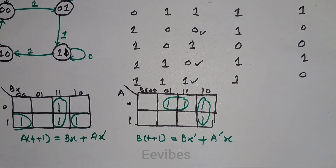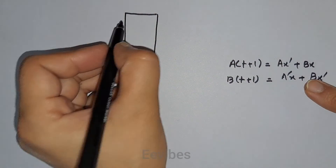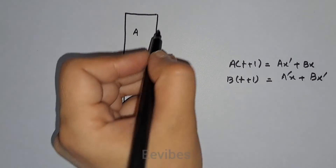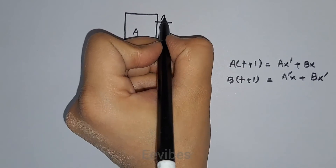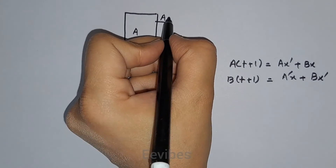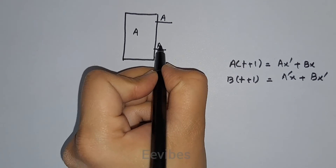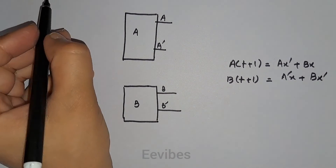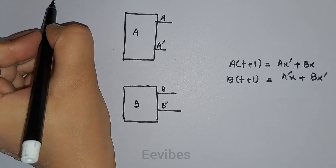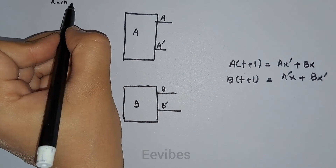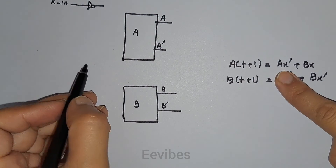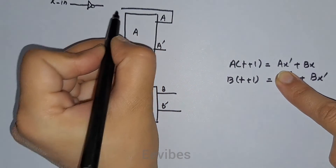The last step is to draw the circuit diagram. We have flip-flop A and flip-flop B. Flip-flop A produces output A(t) and its complement A', and flip-flop B produces B and B'. Here is the input x; we also take its inverted value x' for use in the logic gates.